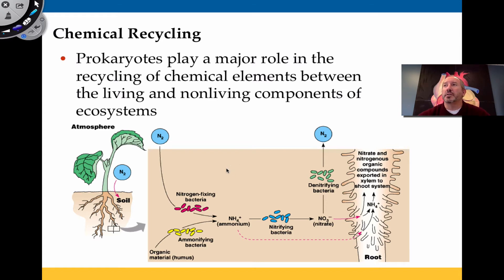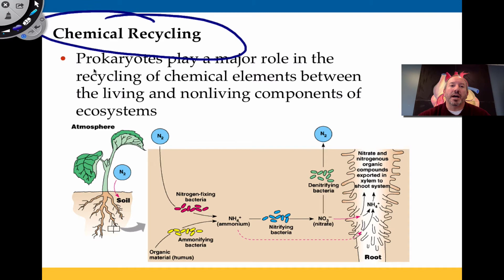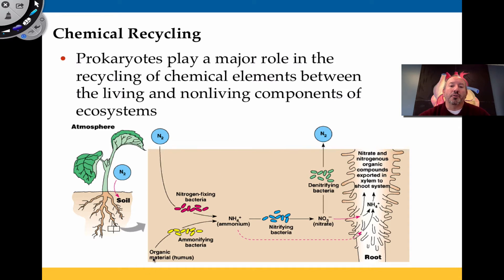Getting back to the soil — we look at our garden with tomatoes growing and don't think much of it, but down in the soil, in terms of chemical recycling, prokaryotes play a major role. Any kind of decomposing organism — something that dies or a compost pile — has ammonifying bacteria that will break down the amine groups of proteins or nitrogen bases of nucleotides and convert them into ammonia. Then nitrifying bacteria will take that ammonium ion and convert it into nitrate or nitrite, which is taken up by roots. Then denitrifying bacteria return nitrogen back into the atmosphere, completing the nitrogen cycle.